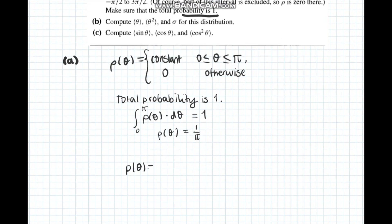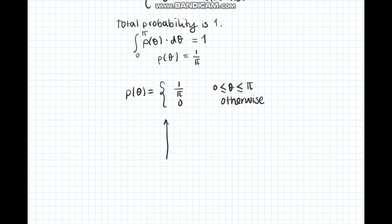We are also asked to sketch rho of theta, which is just a straight horizontal line at the value 1 over pi from 0 to pi, and 0 for all other angles.